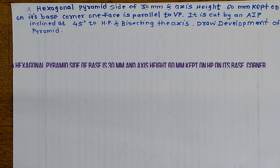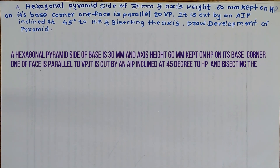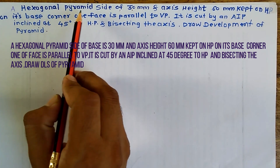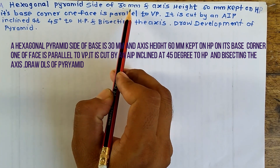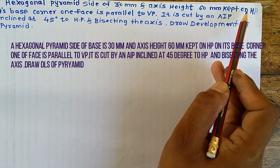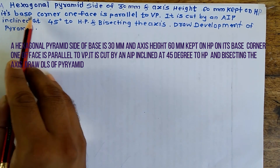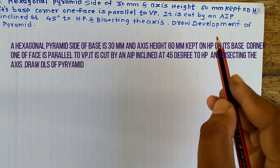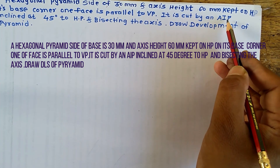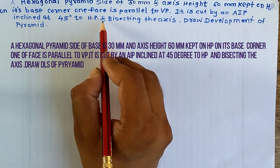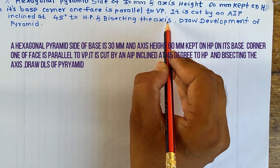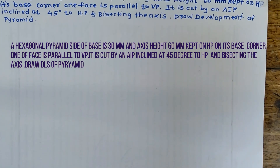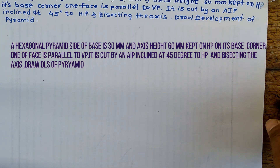Today we will see the tutorial on development of a hexagonal pyramid. The problem statement is: a hexagonal pyramid with side of base 30 mm and axis height 60 mm, kept on HP on its base corner with one of the faces parallel to VP, cut by an auxiliary inclined plane at 45 degrees to HP and bisecting the axis. Draw the development of the pyramid.